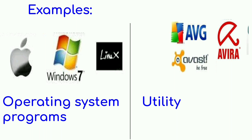Utility programs are another type of system software. For example, we have antivirus software like AVG, Avast, and Avira. These are called utility programs. That's all. Thank you.